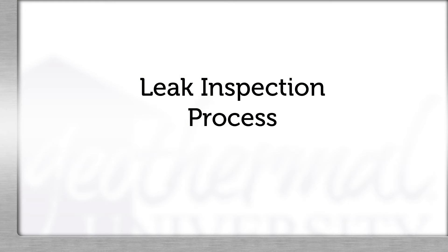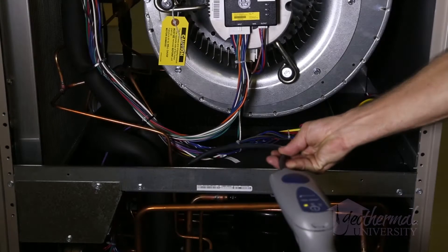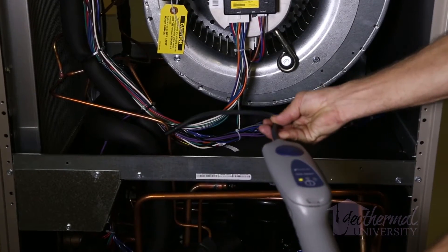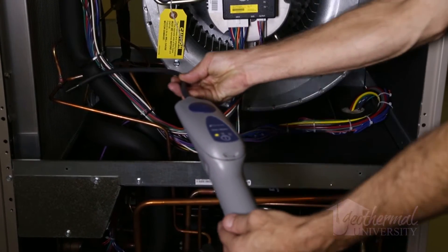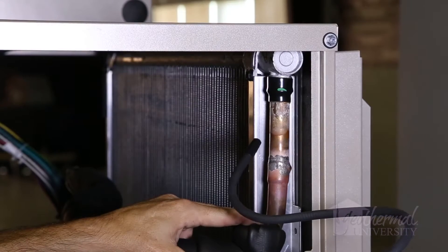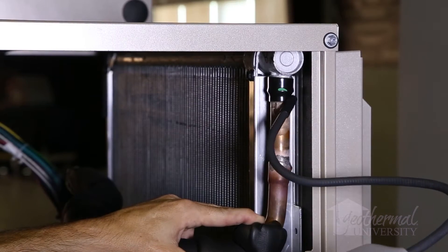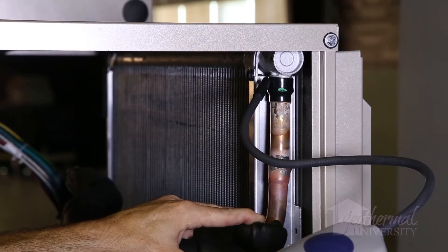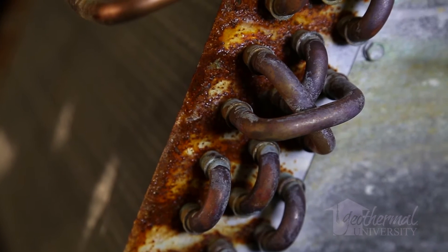If you suspect the refrigerant system has a leak, it is important to have a good leak inspection process. In a newer system, the most logical place to look for a leak is a braze joint, mechanical connection, or transition joint. As the system ages, you may begin to check the component's degradation due to corrosion.